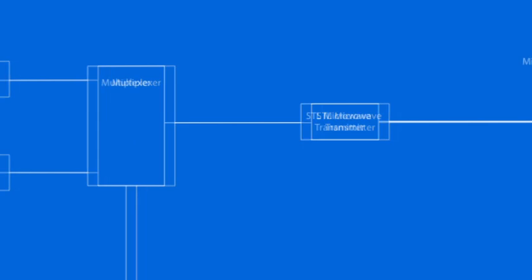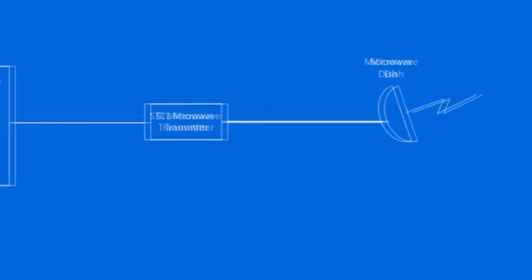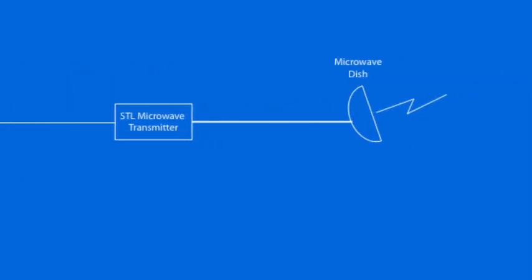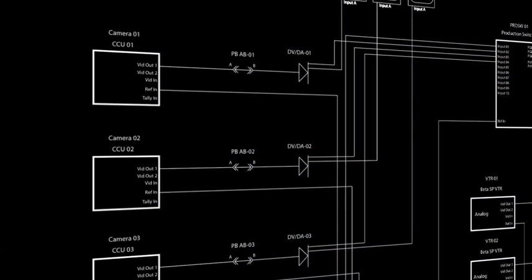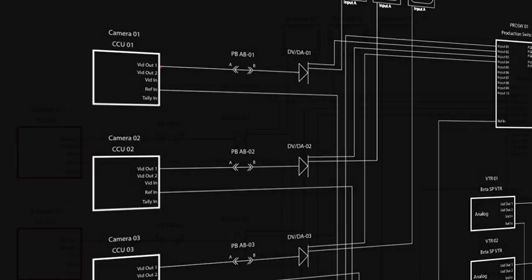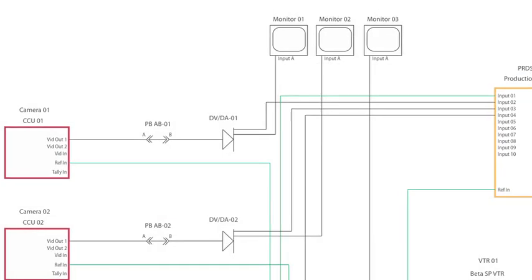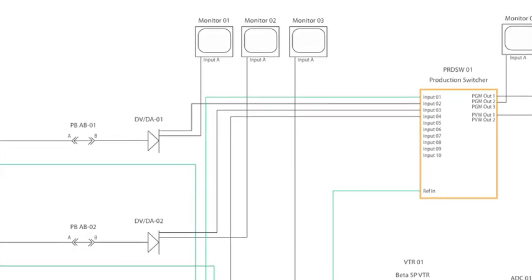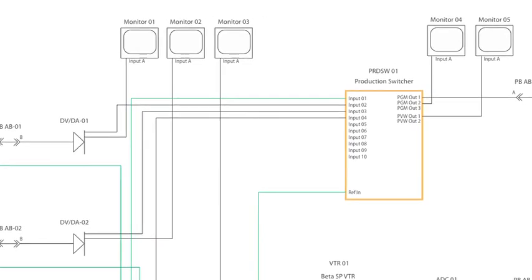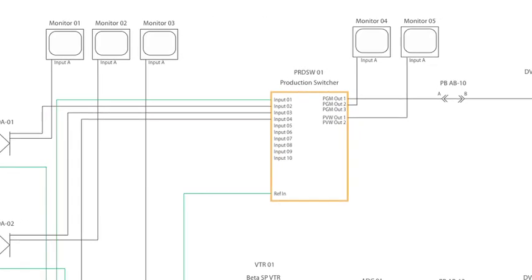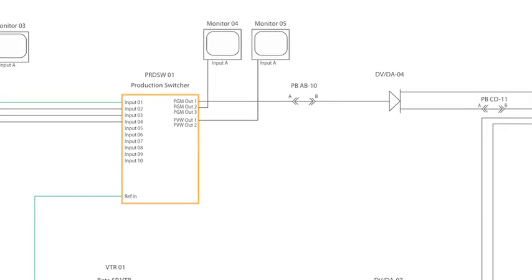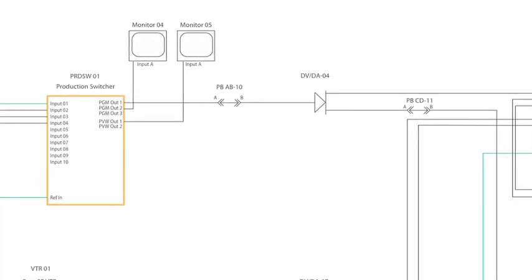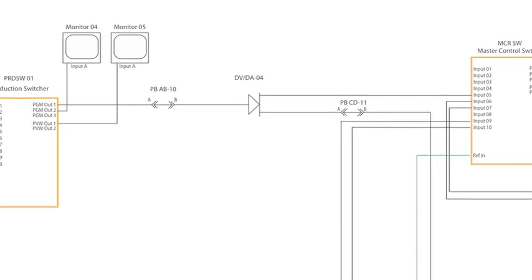This is a pretty typical wiring diagram for a broadcast facility, and they can look pretty daunting to the uninitiated with all the symbols and names. For this tutorial, we've drawn up the plans for a typical small television station. It contains studio cameras, a production switcher, a master control switcher, followed by an EAS keyer, the encoding system, and finally a microwave transmitter that will transport the encoded signal to the transmitter.